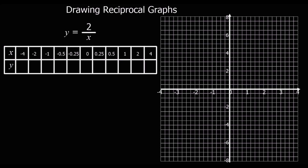Here's another example — try and fill out the table and draw the graph. So we've got 2 over 4, which is a half. 2 over 2 is 1. 2 over 1 is 2. 2 over a half is 4. 2 over a quarter is 8. And 2 over 0 is undefined — we're not able to work it out.